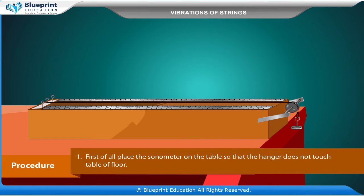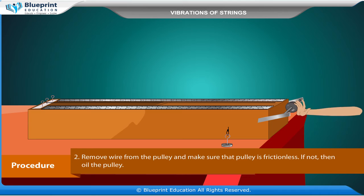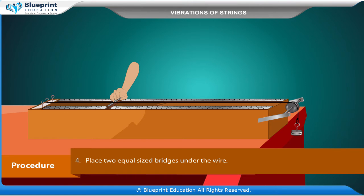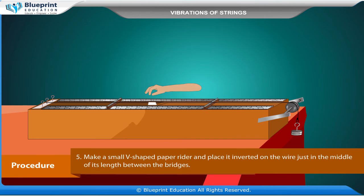Procedure: First of all, place the sonometer on the table so that the hanger does not touch the table or floor. Remove the wire from the pulley and make sure that the pulley is frictionless. If not, oil the pulley. Replace the wire on the pulley and place 2–3 kg weight on the hanger and stretch the wire. Check that there are no kinks in the wire. Place two equal-sized bridges under the wire.